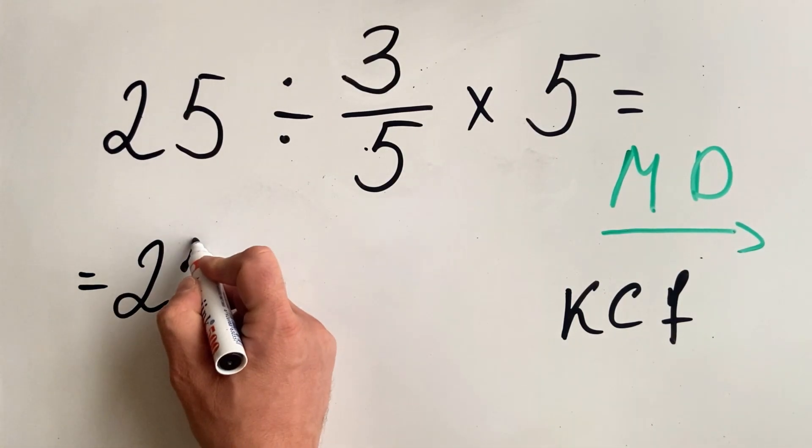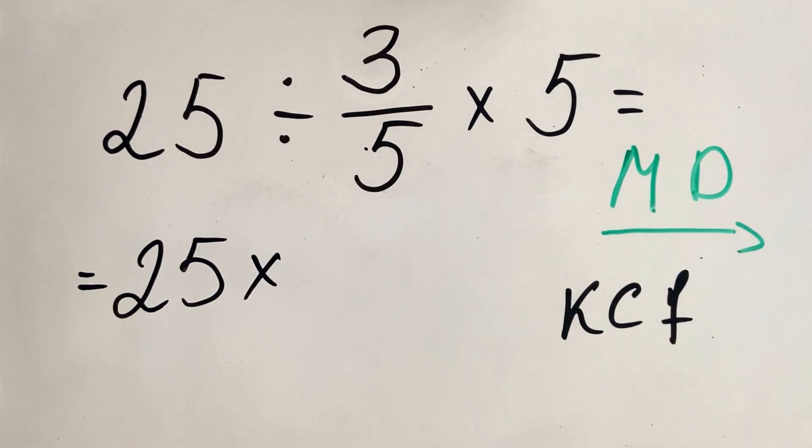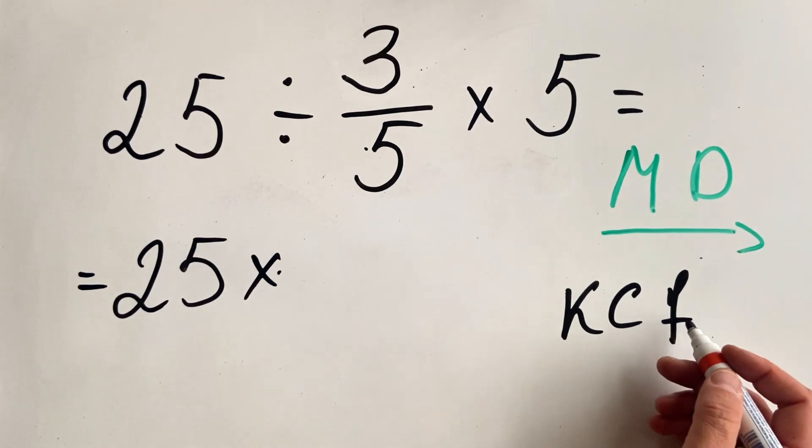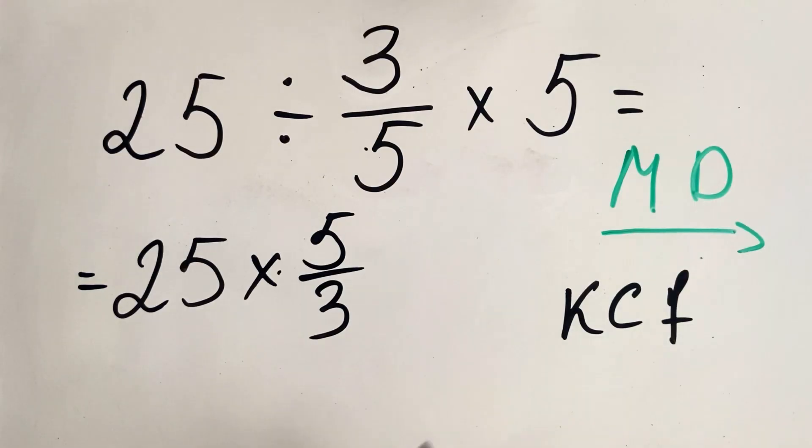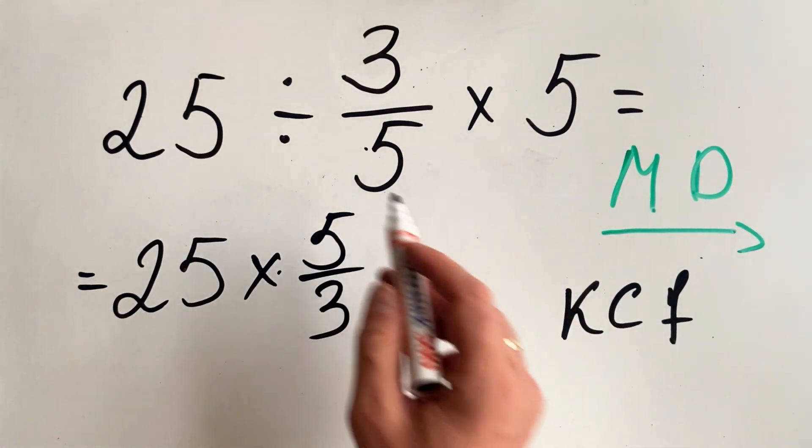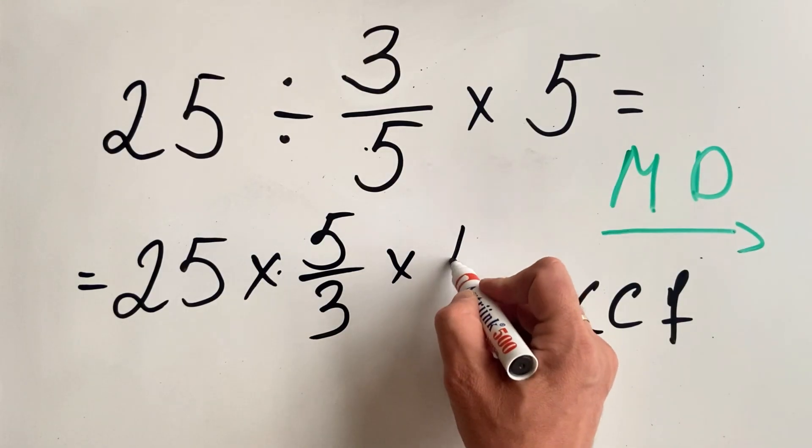So we keep the 25, change the sign to multiplication, and flip the number so we get 5 over 3. So keep first, change the sign, and flip the third number, and multiply by 5.